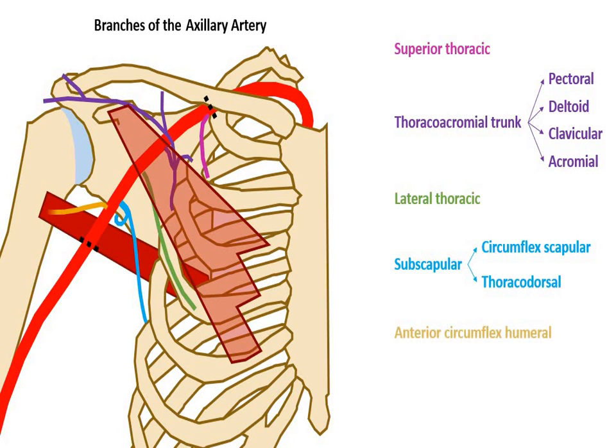Here is the anterior circumflex humeral artery. It runs anterior to the humerus and anastomoses with the final branch of the axillary artery, the posterior circumflex humeral artery, which will pass through the quadrangular space and posterior to the humerus.